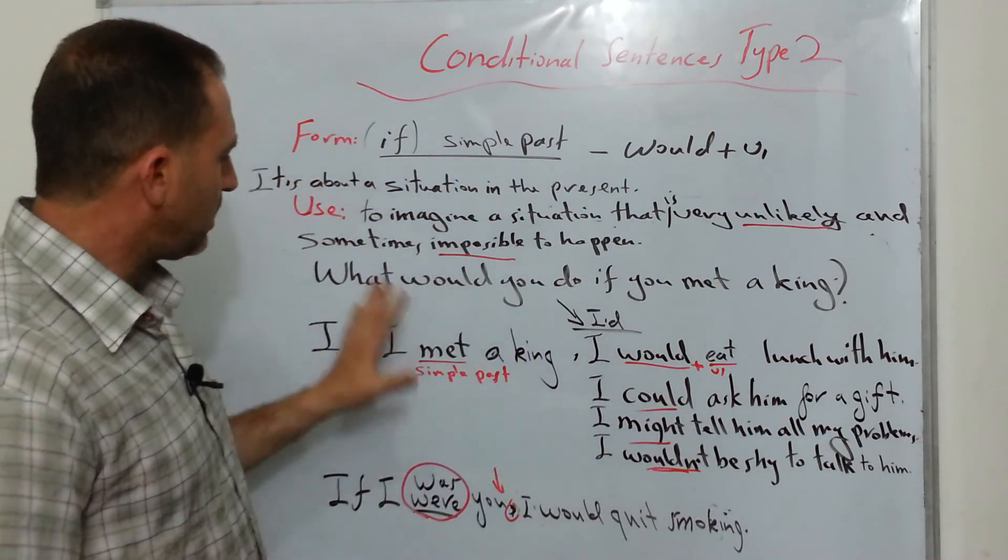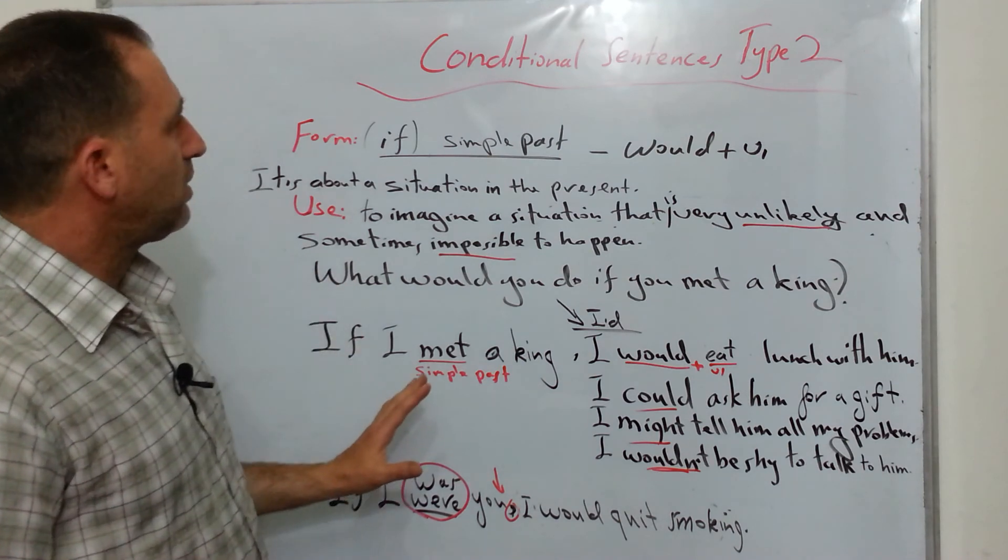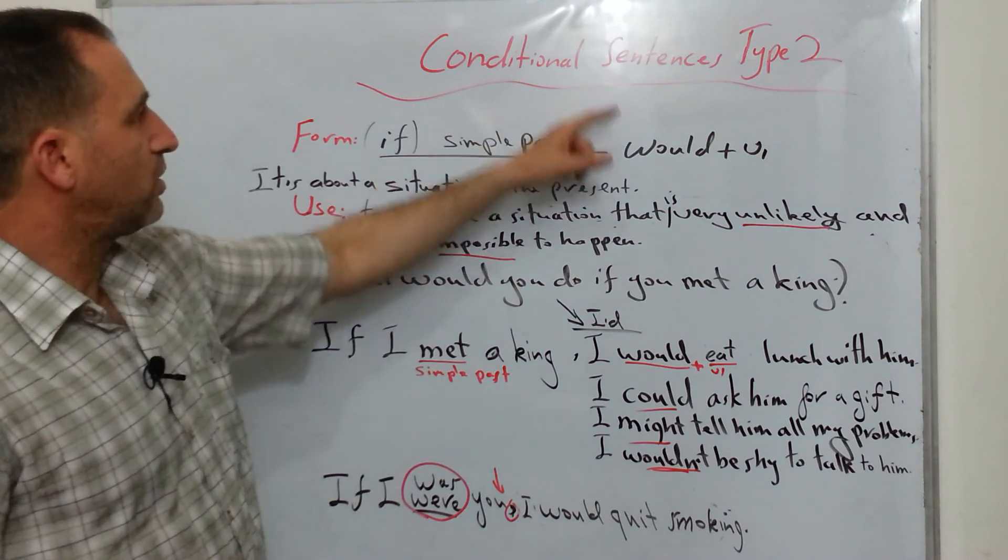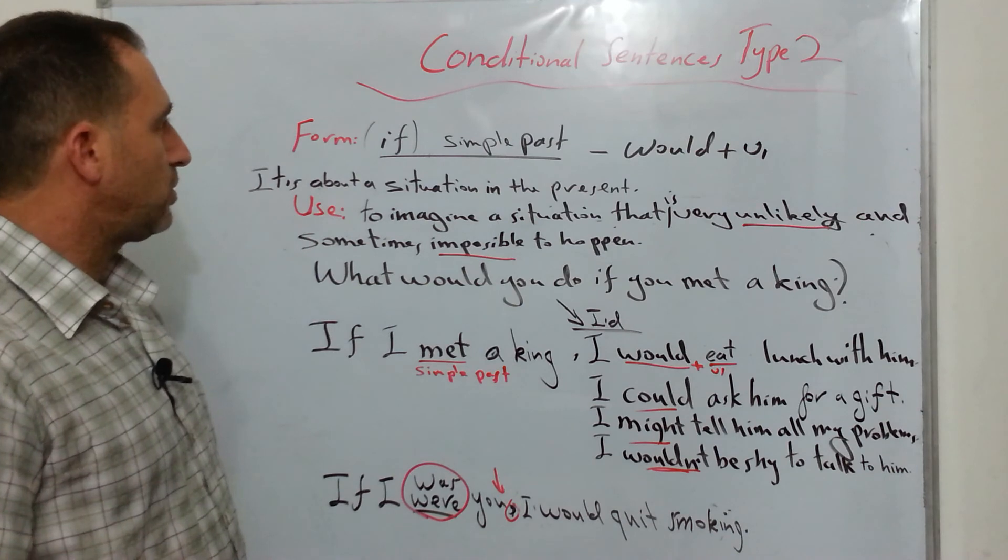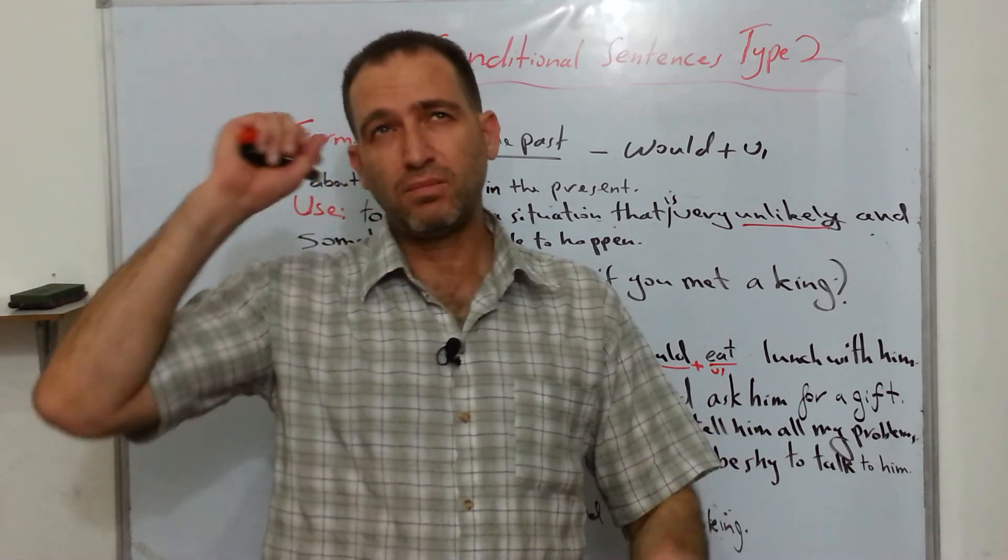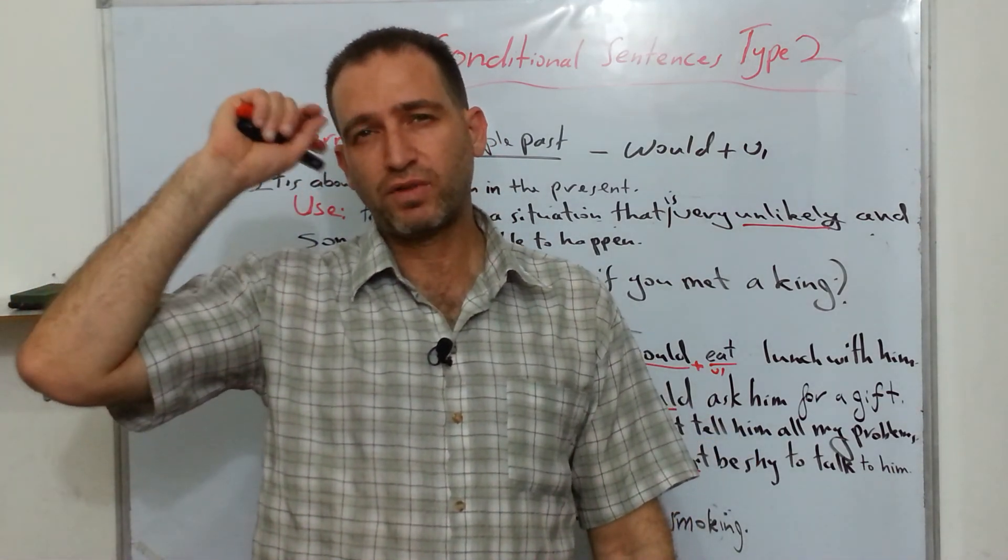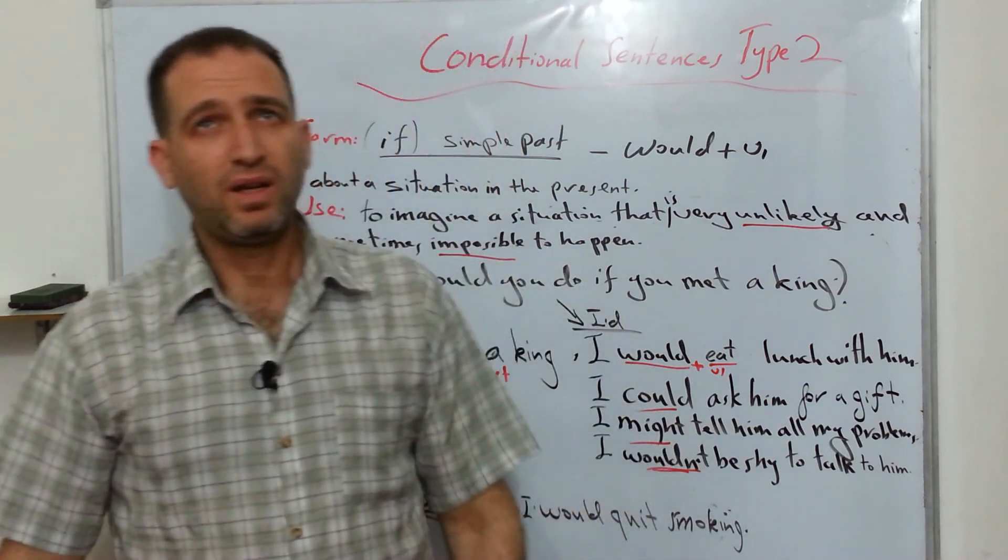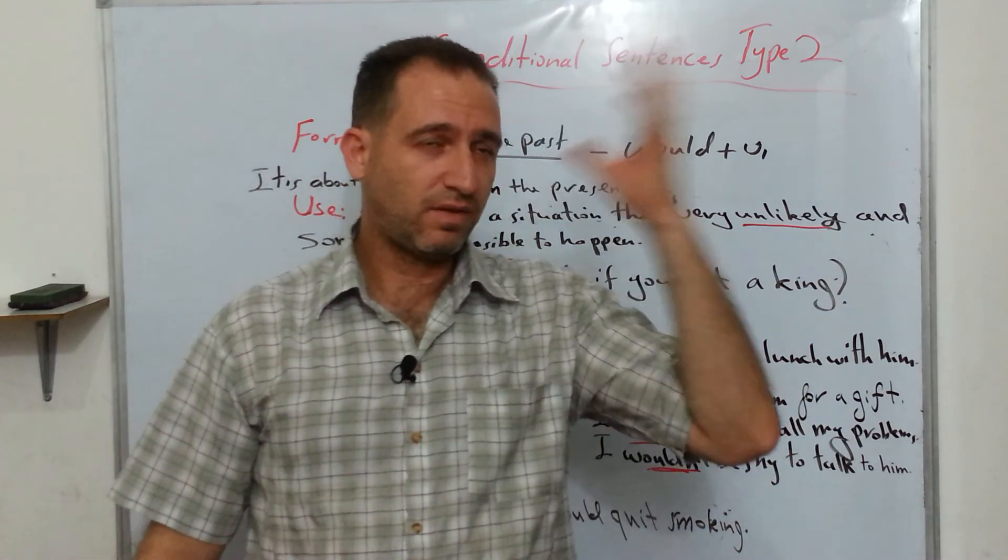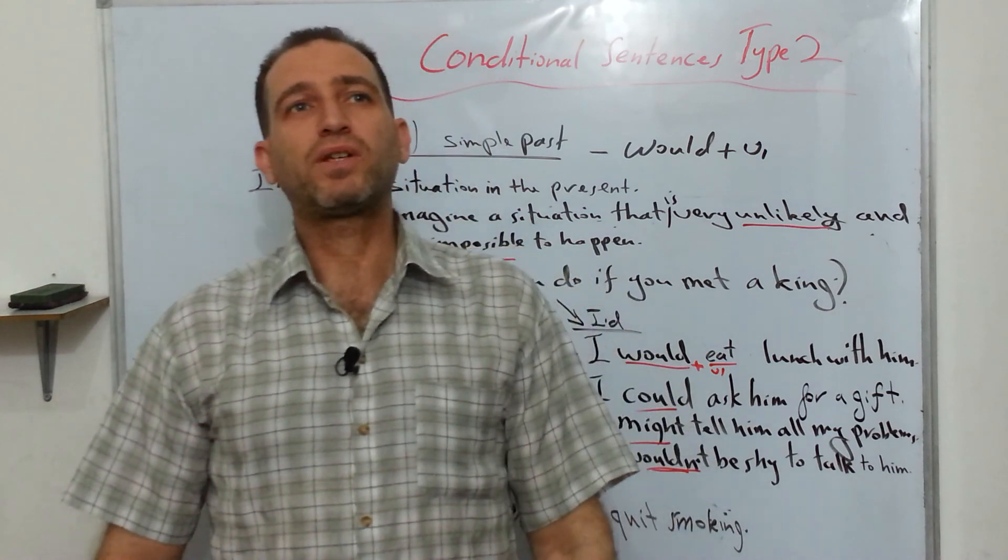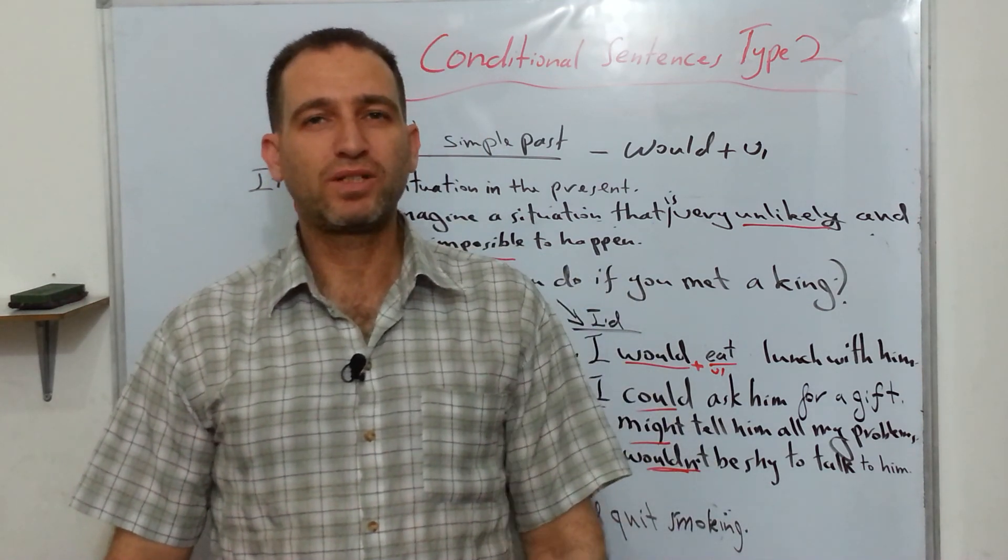So I hope this stuff is clear for you. This is what we call conditional sentences type 2. What we're talking about is an imaginary situation, a hypothetical situation, a situation which is not real. I'm just thinking about it at the present time. And thanks for watching.